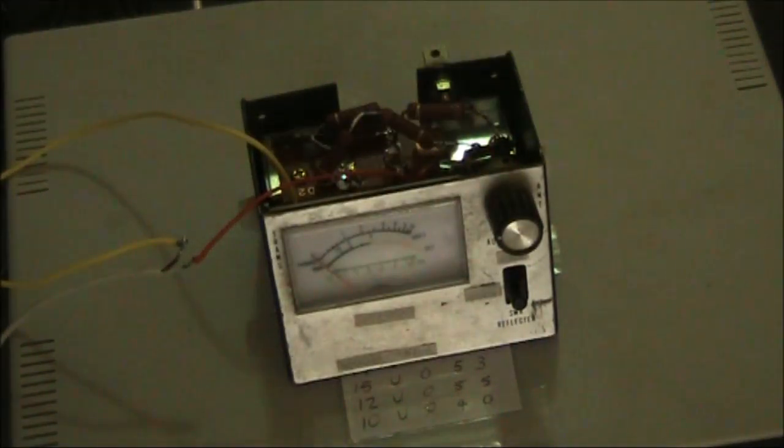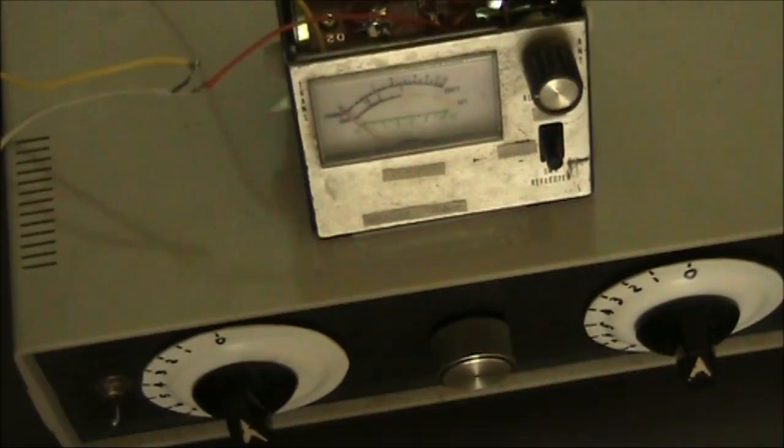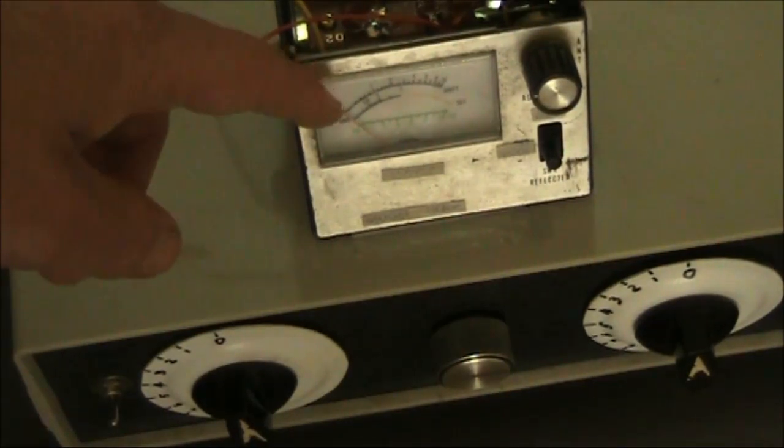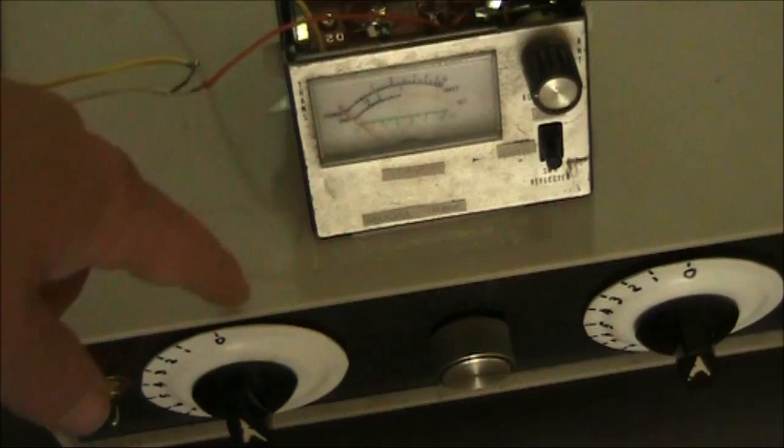About a year ago I did a teardown of this resistance antenna bridge. If you don't know what one of those is, it's a little instrument you put between your antenna coupler and your transceiver to help you adjust the antenna coupler. A bit like a poor man's VSWR meter. The bridge doesn't give you a direct reading of VSWR, but what it does is good enough. It gives you a null on the meter, with the needle at zero, when you're tuned up correctly with the antenna coupler.